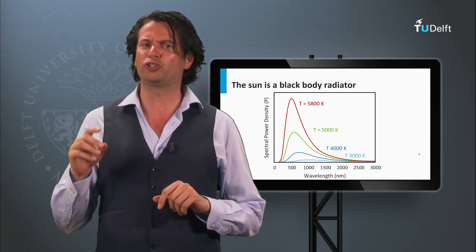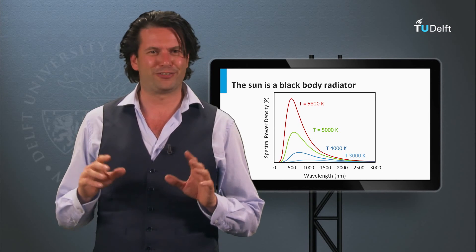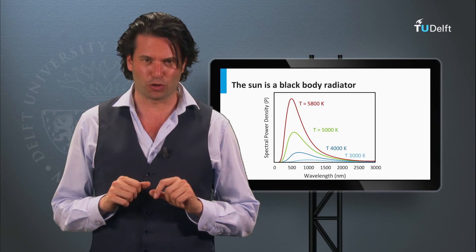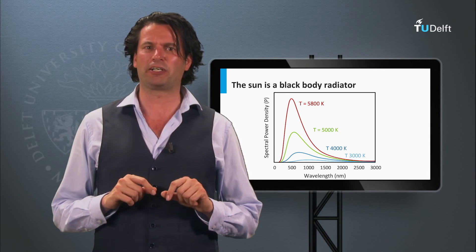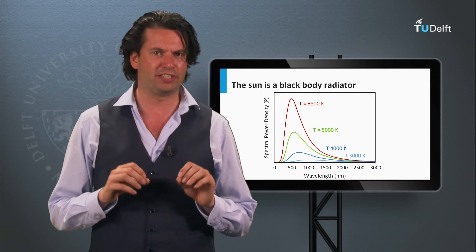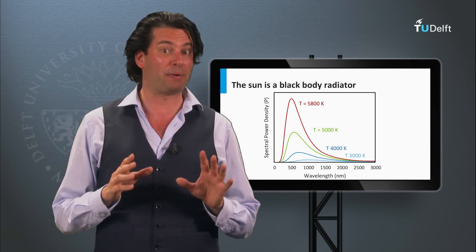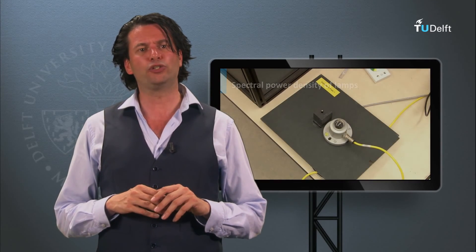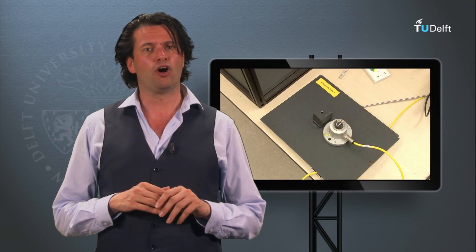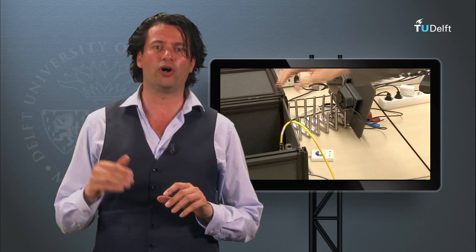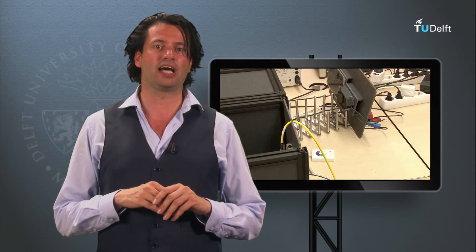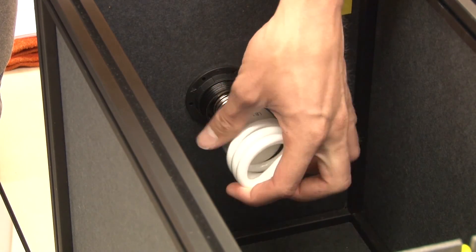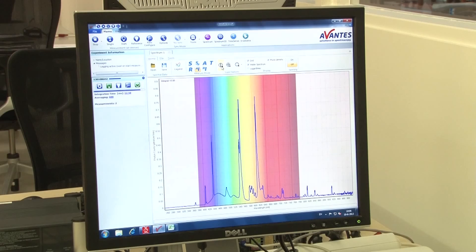To test solar modules we use so-called solar simulators. For that we use lamps which simulate the shape of the solar spectrum. This is far from straightforward, as regular lamps have different shaped spectra compared to that of the Sun. Let's go to the Delft Solar Lab and look at two spectra, one of a compact fluorescent lamp and the other of a color changing LED strip. The lamps are placed in a black box and spectra shapes are measured using a spectrometer.